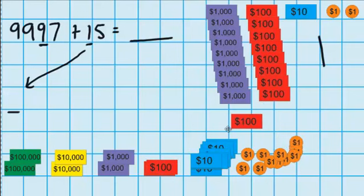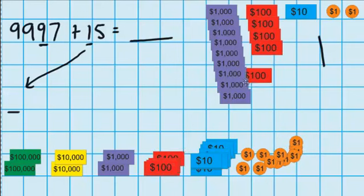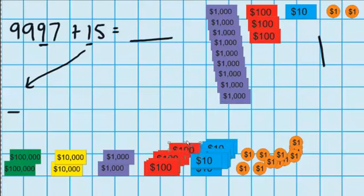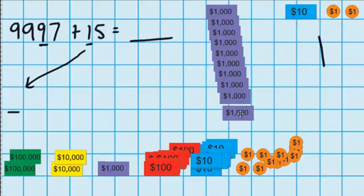So let's do that now. There goes 1, 2, 3, 4, 5, 6, 7, 8, 9, 10 — which we're swapping for one $1,000 note, because 10 $100 notes is the same as $1,000.